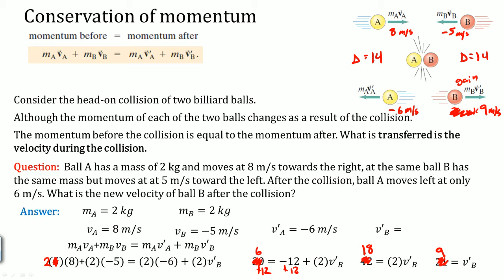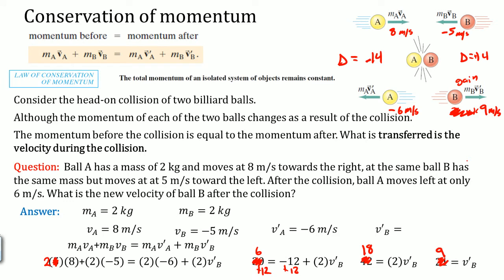Because the masses are the same, whatever velocity A lost — a delta of negative 14 — that same delta of positive 14 is gained by B. Please understand: the total momentum of an isolated system will always remain constant. Nothing is lost.